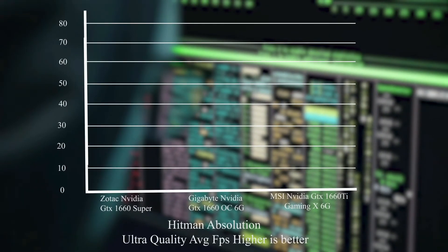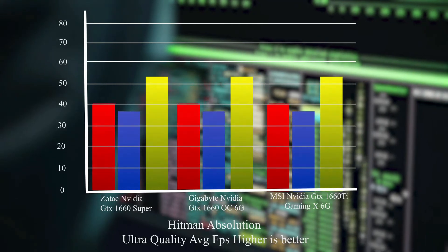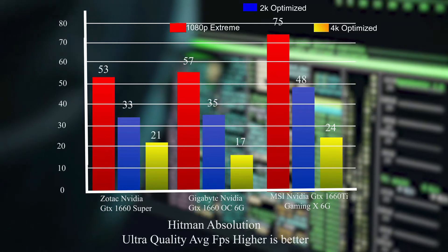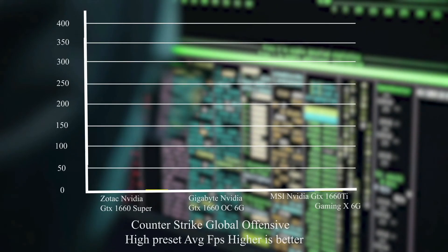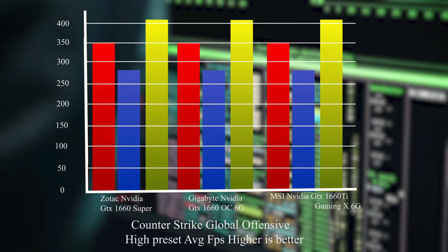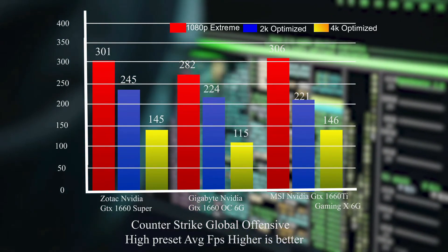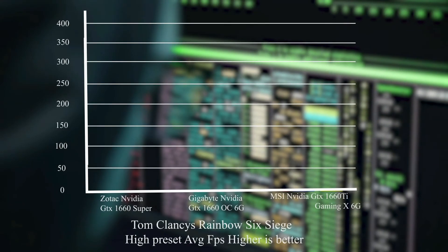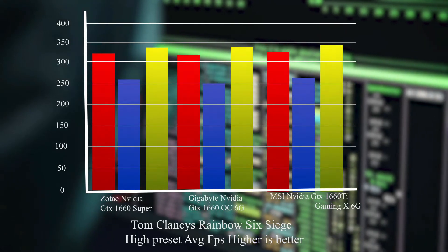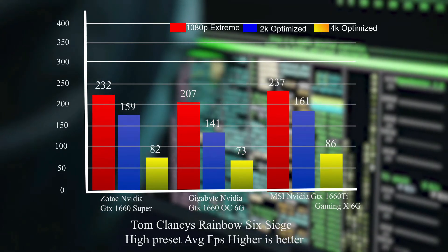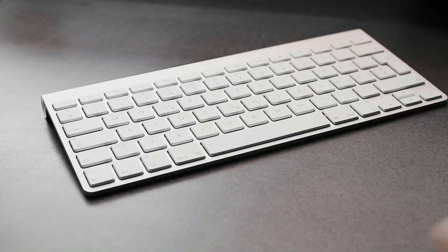Although the 1660 Super is slightly behind the 1660 Ti in Final Fantasy XV, it's still very playable at around 6000 FPS score. In Hitman Absolution, the 1660 Super performs very poorly, scoring much less than both cards. In Counter-Strike: Global Offensive, the 1660 Super is very close to the 1660 Ti and better than the 1660. In Tom Clancy's Rainbow Six Siege, the 1660 Super gets 232 FPS, which is only 5 FPS less than the 1660 Ti — a good result.